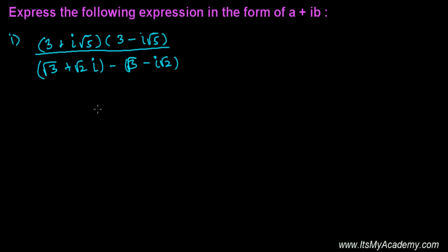Here we have a complex-looking complex number. We need to convert this into the a + ib format. Let's solve it. First, we need to multiply these two complex numbers.